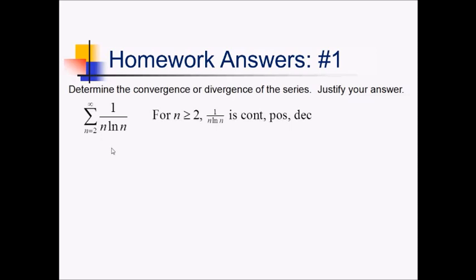So it meets all the conditions we need to use the integral test. We're going to take the integral of this from 2 to infinity. If that converges, this converges; if that diverges, this diverges. So let me set up. It's going to be an improper integral because I'm going to infinity. So I'll have the limit as b approaches infinity of the integral from 2 to b of dn over n·ln(n). This is not a straightforward integration problem — we have to use substitution here. I noticed that I have ln whose derivative is 1 over n, so u-substitution might work. Let me let my u value be ln(n).